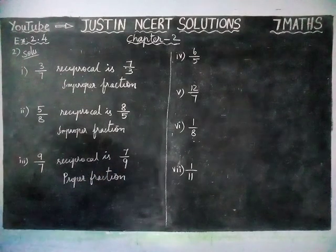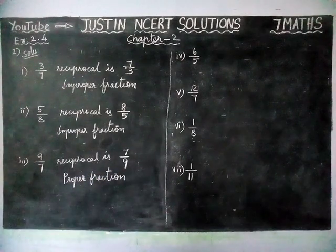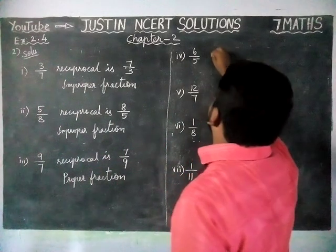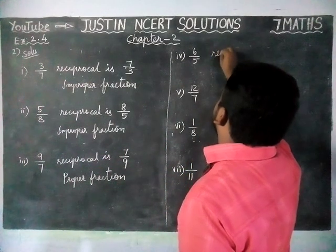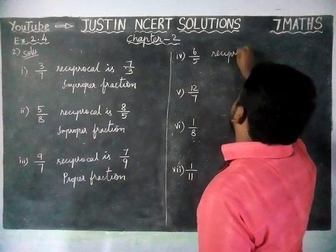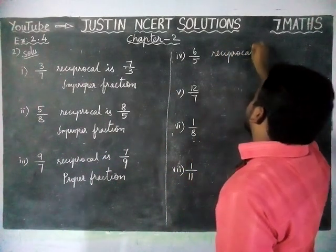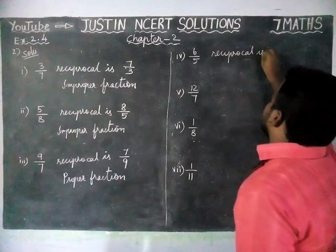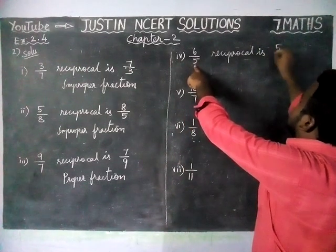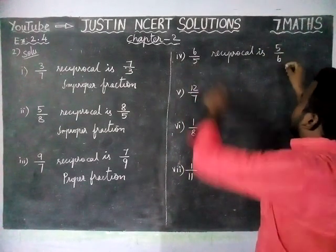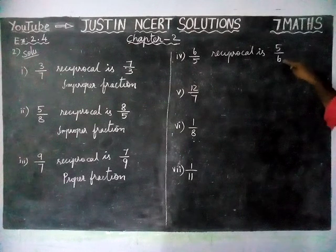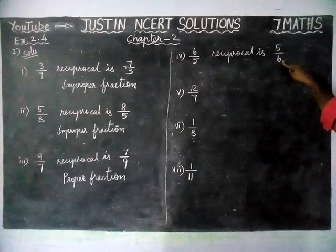Fourth question: 4 by 6. Here also the numerator is less than the denominator, therefore this is a proper fraction.